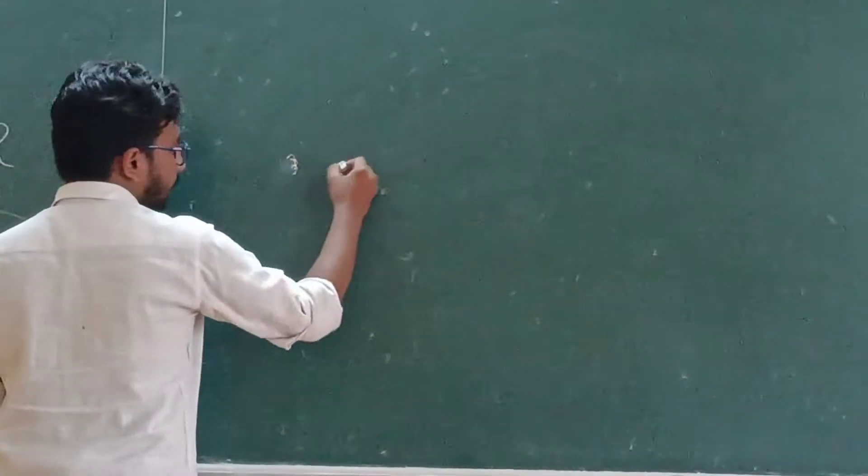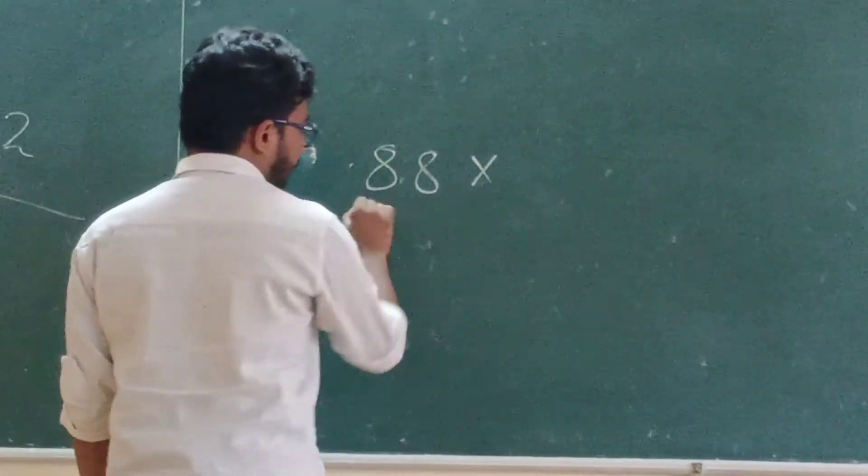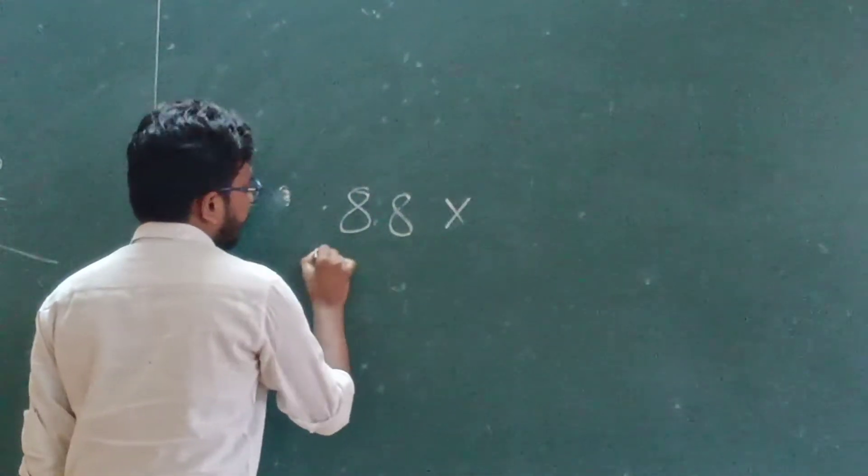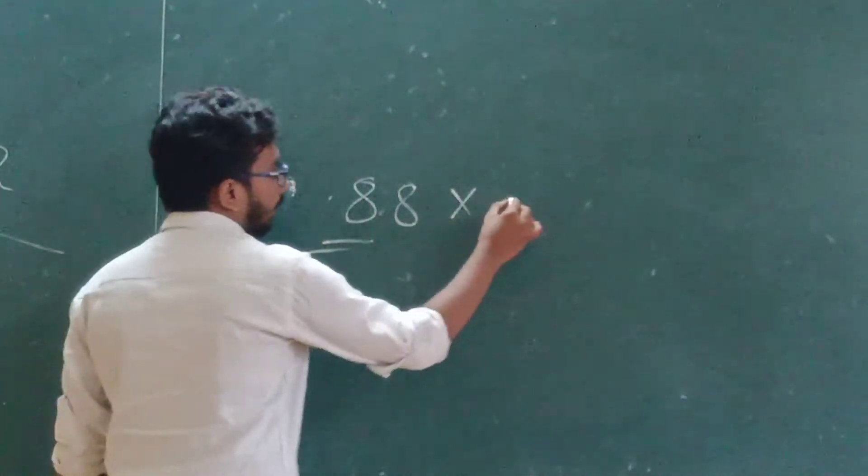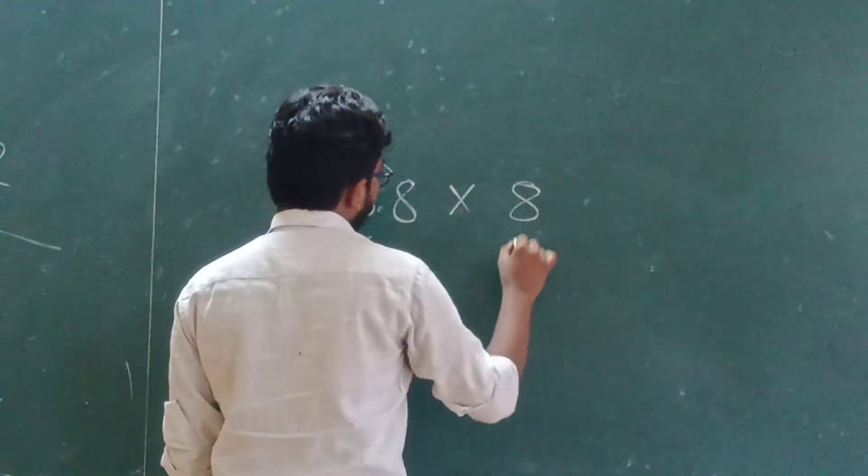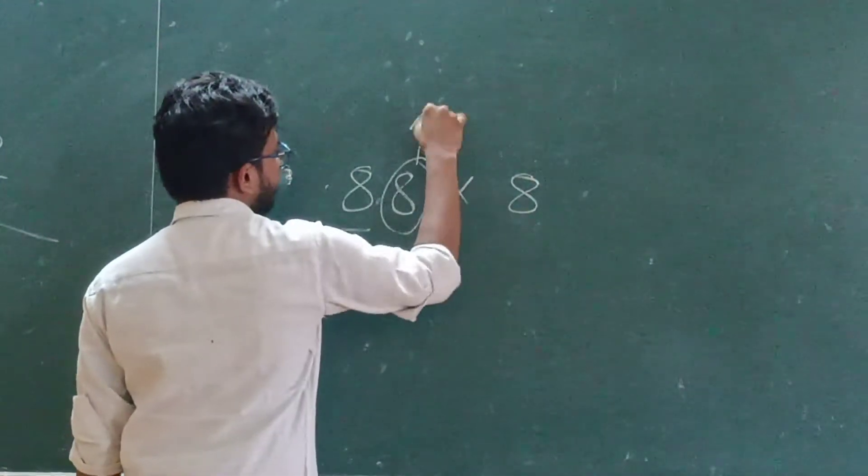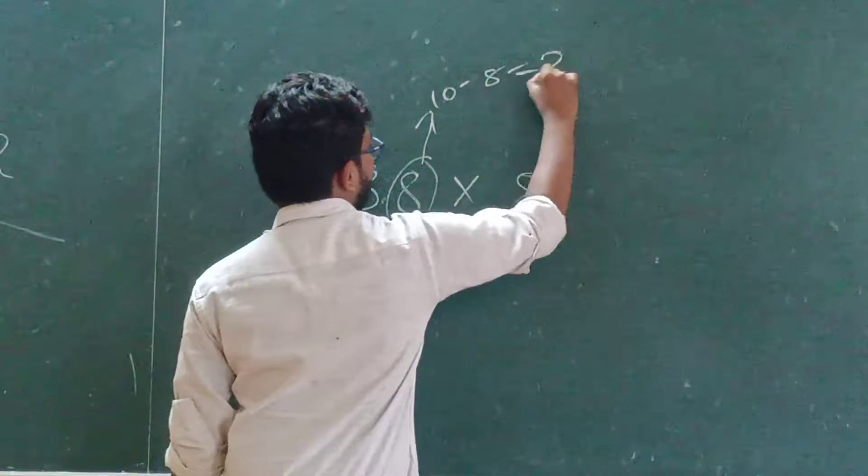So, first of all, take a number. Eighty-eight. And take another number, which has the same tens place in the given number. Like eight, and you have to take another number. Ten minus eight is equal to two.